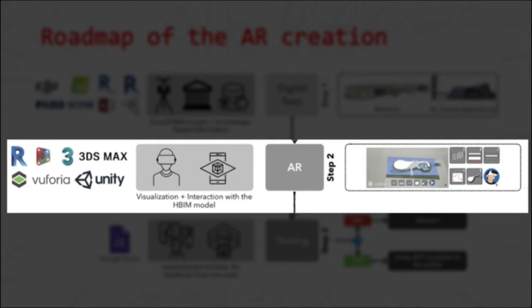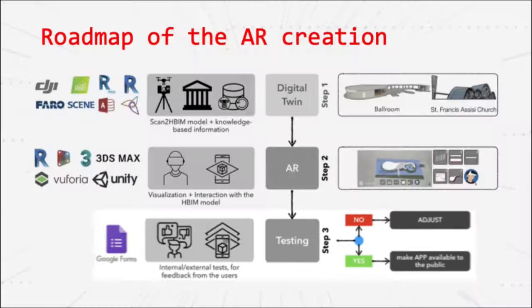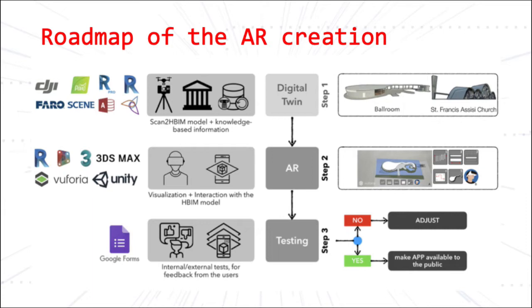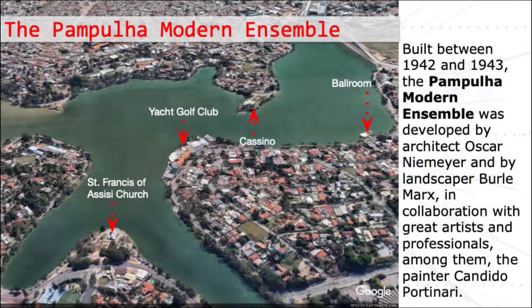The framework includes creating the HBIM model in Autodesk Revit. For the AR process, the model organization was crucial. To get the model organized in the way needed, we used the Dynamo visual programming tool. Dynamo allowed us to create the building components into groups, which made the HBIM model easy to import into the AR model authoring platform.